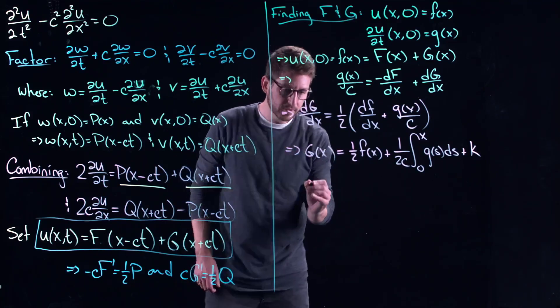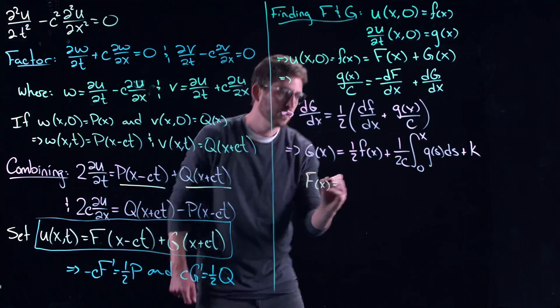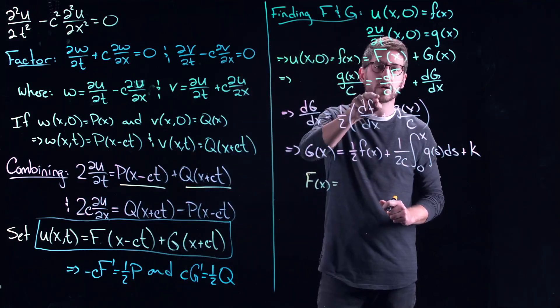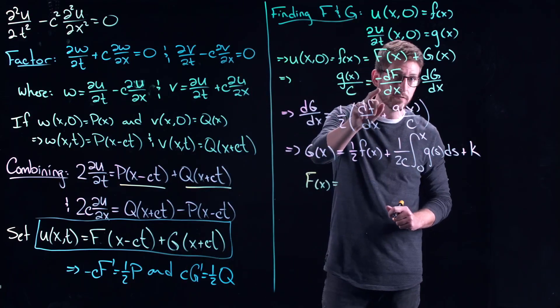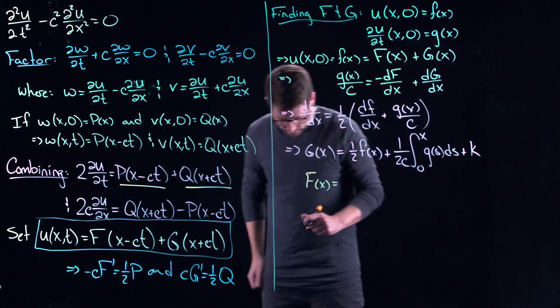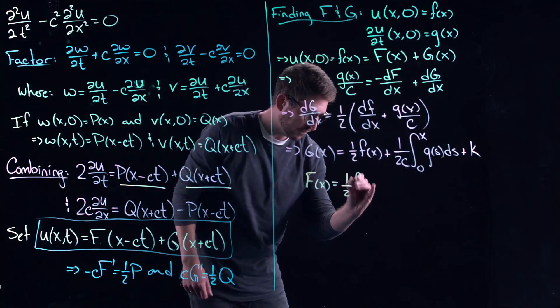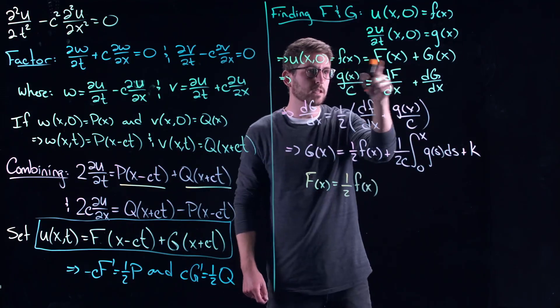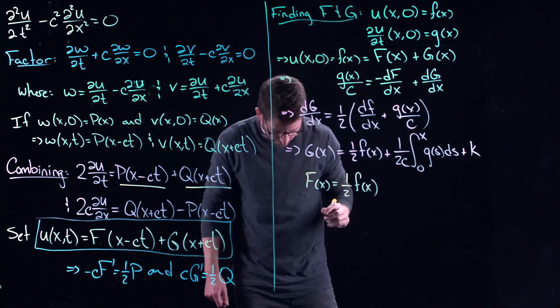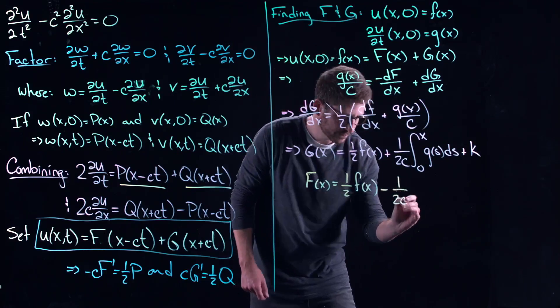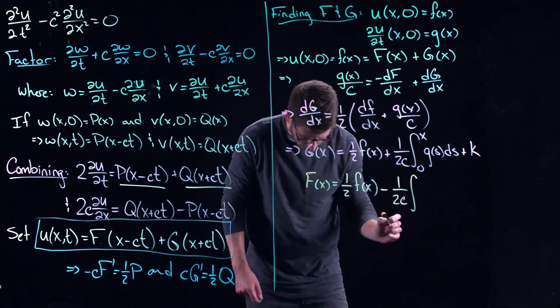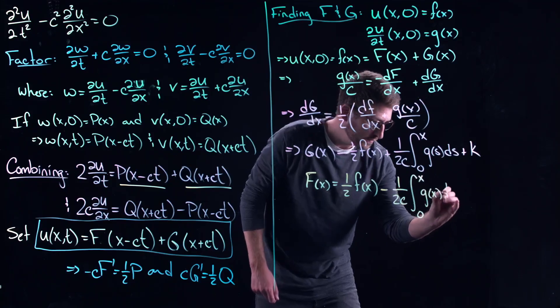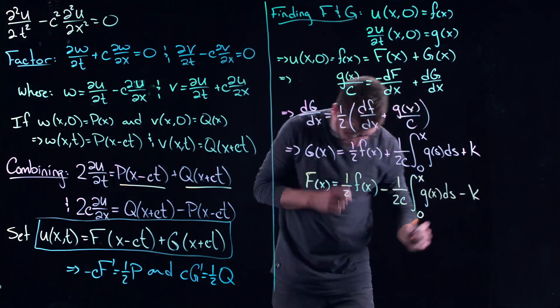Similarly, I can do the same thing for capital F because I can subtract these two equations. I can isolate for the derivative of capital F, and then what I can find is that this thing is going to be equal to one-half F of X. Similarly, because I had to take a derivative to get this derivative here. And then minus one over two C, integral from zero to X of G of S dS, and let's just say minus K here.